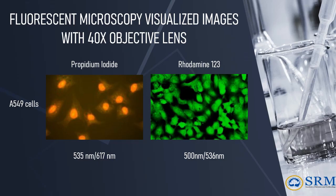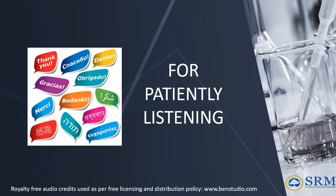Fluorescence microscopy visualized images of A549 cells stained with propidium iodide and rhodamine 123 at their respective wavelengths are shown. Thank you for patiently listening.